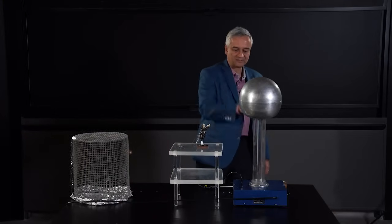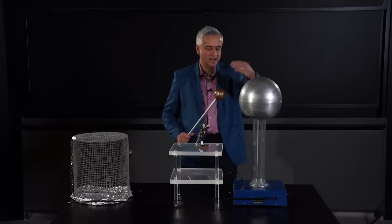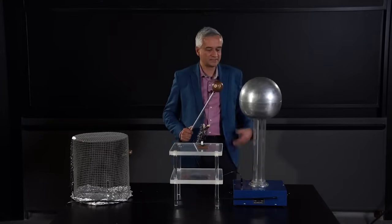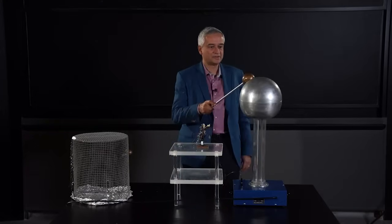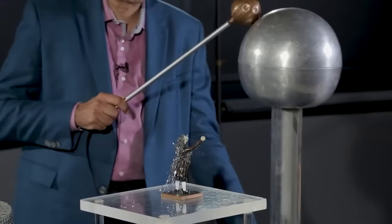You can think of the belt in the Van de Graaff generator going around like this as analogous to the air circulation underneath the thunderhead as the thunderhead builds up, and then you can think of this up here as the analog of the cloud.